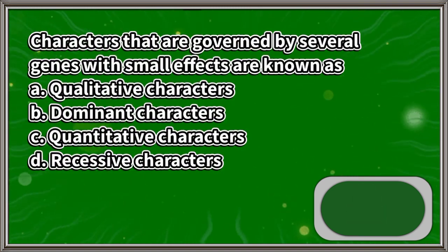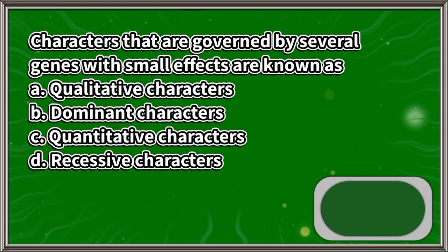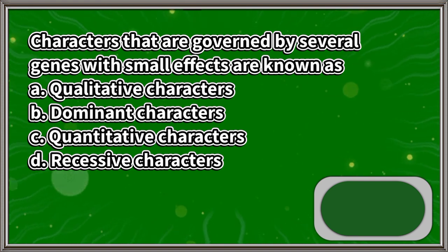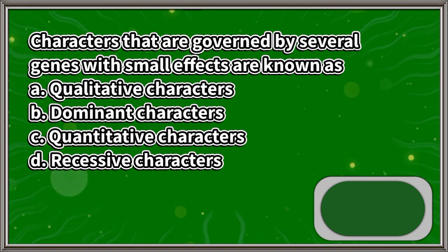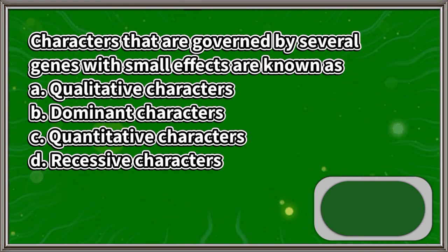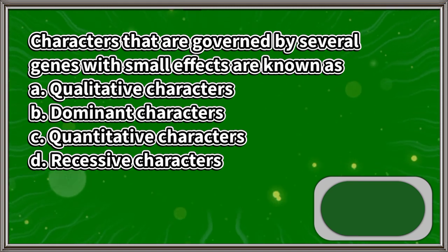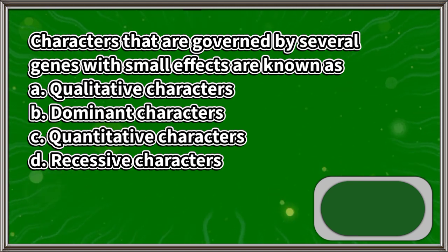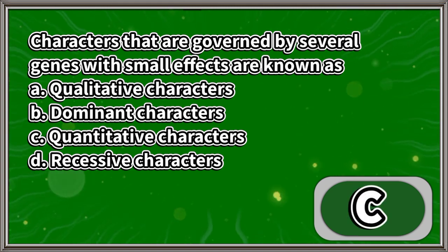Characters that are governed by several genes with small effects are known as: A. Qualitative characters, B. Dominant characters, C. Quantitative characters, D. Recessive characters. The answer is letter C.